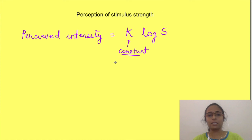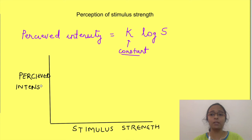If we depict this concept graphically, where x-axis shows the stimulus strength and y-axis shows the perceived intensity of the stimulus, the relationship between stimulus strength and perceived intensity is something like this. Now you can note in the graph how Weber's law is explained by Fechner's law.